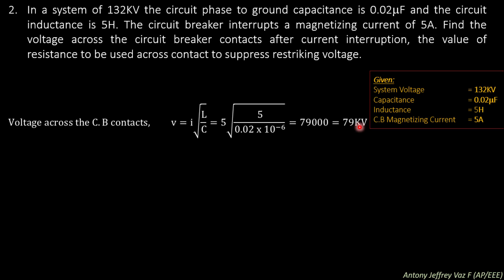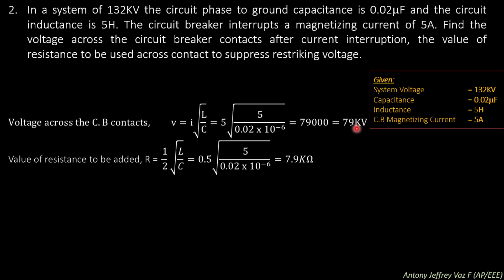So the voltage across the circuit breaker contacts while the arc is being extinguished is 79 kV. Next, we need to find the resistance to suppress the restriking voltage. The formula is R = 1/2 into root of L by C, simplified as 0.5 into root of L by C. Substituting the known values of inductance and capacitance, we get 7.9 kilo ohms.